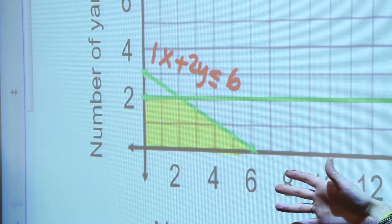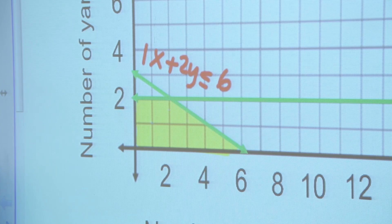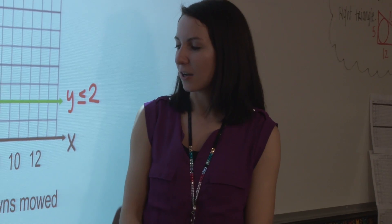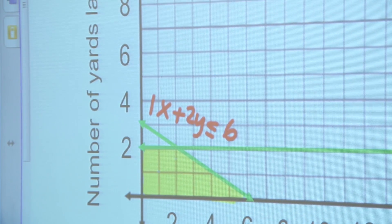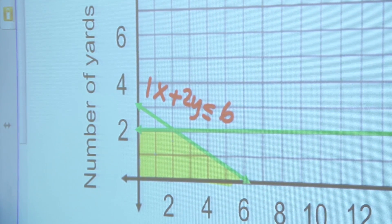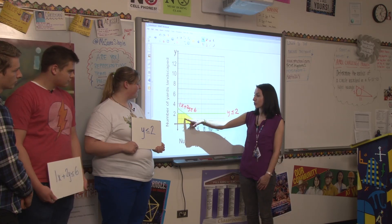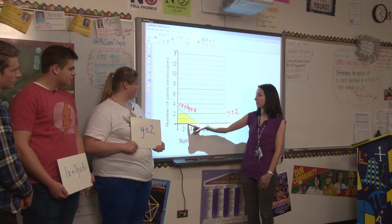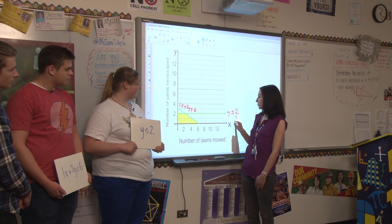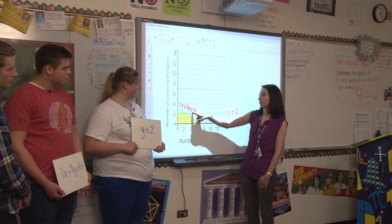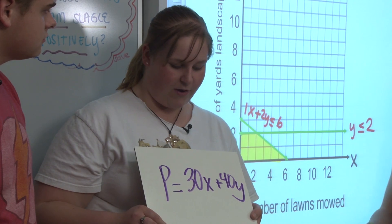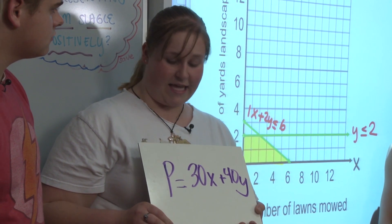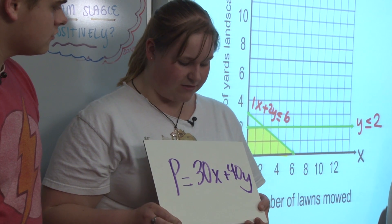Great! So now when we graph our inequalities, this shaded area right here represents the feasible region. All of the coordinates in that area represent the combinations of lawns you could mow and yards you could landscape. There's an infinite amount of points that meet your constraints, but only a finite amount that are whole number answers, like (1,1), (2,1), and (3,0) are just a few possible solutions that allow you to landscape no more than two yards and work no more than six hours per day. So if you're charging $30 for every lawn you mow and $40 for every yard you landscape, your profit equation is P equals 30X plus 40Y.